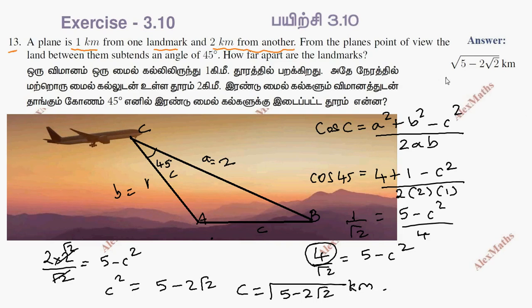So c is equal to the square root of 5 minus 2 root 2 kilometers.